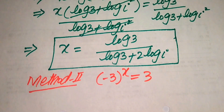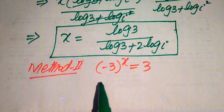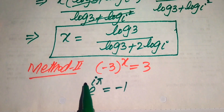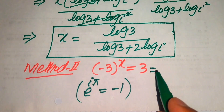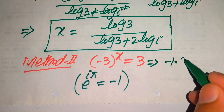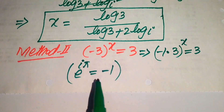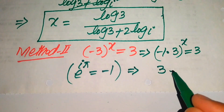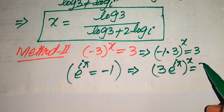For the second method, we use Euler's identity: e to the power of iota·π equals minus 1. We rewrite the equation as (minus 1 · 3) to the power x equals 3, then replace minus 1 with e^(iπ). So the equation becomes (3 · e^(iπ)) to the power x equals 3.